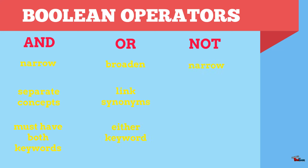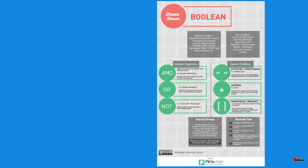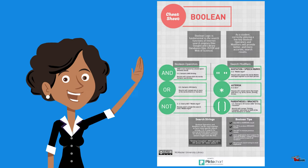NOT is another way to narrow a set of results. A common use of the Boolean operator NOT is to exclude terms that are frequently being retrieved but do not relate to our topic. When we use the operator NOT, the search engine does not retrieve any documents that contain the keyword following the operator. For more information, check out McMaster Library's Boolean Cheat Sheet, or come ask a librarian!